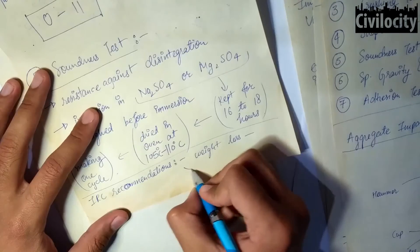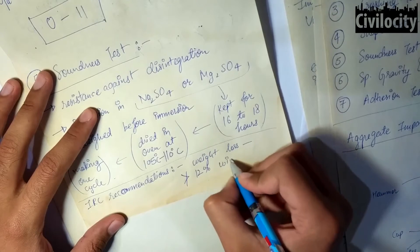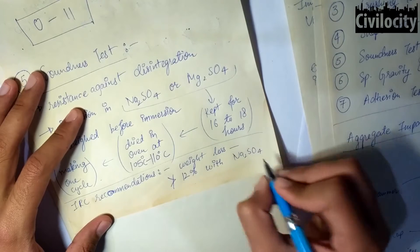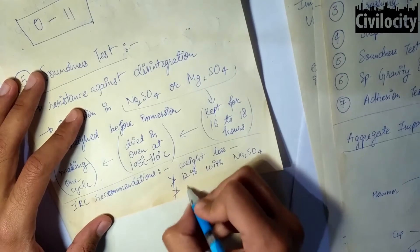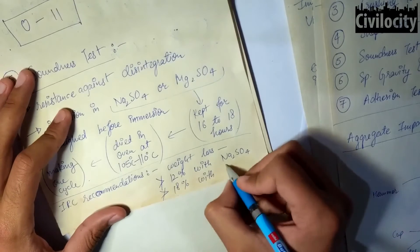IRC has specified that after five such cycles, the weight loss in the aggregates should not be more than 12 percent with sodium sulfate and should not be more than 18 percent in case of magnesium sulfate.